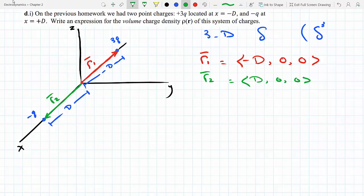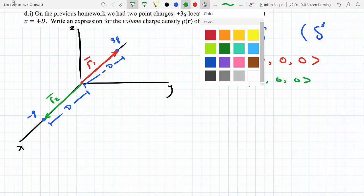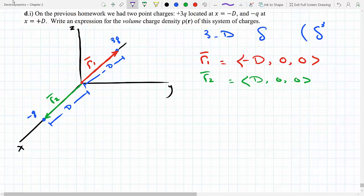Now I can characterize my delta function or my rho. My rho of r will be a delta function because the charge is only at specific points. This is going to be r minus r1 times 3q.